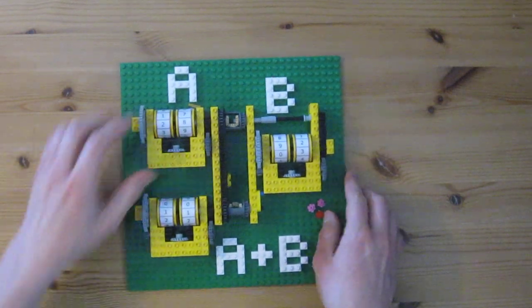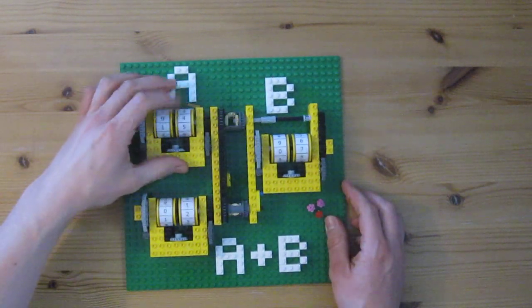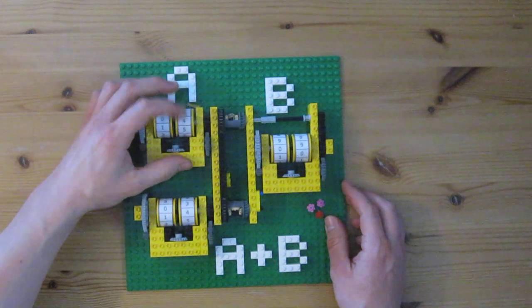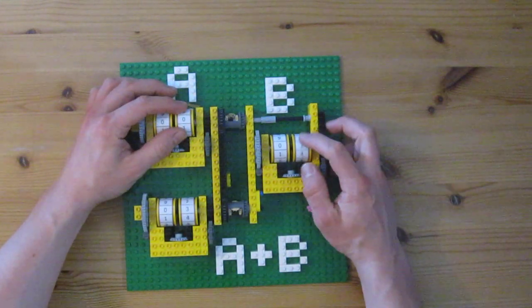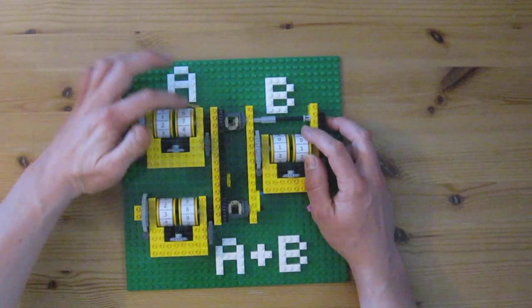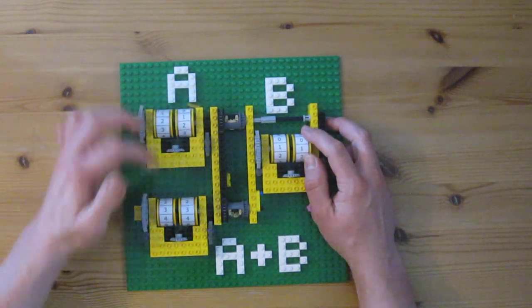And finally, I've got the full digit adder. So here we'll put on zero and zero, it's giving a zero. And if I say what's 11 plus 22, it's 33.